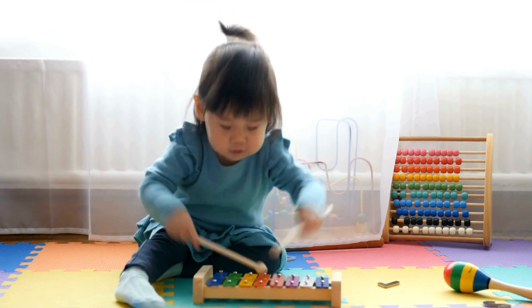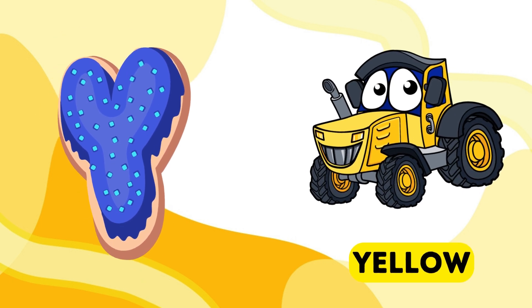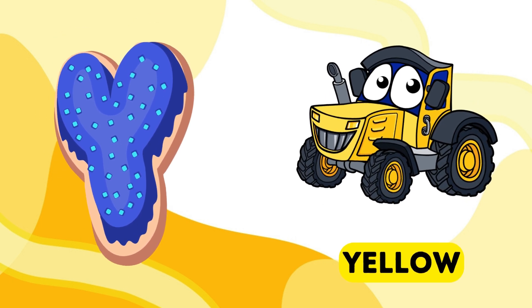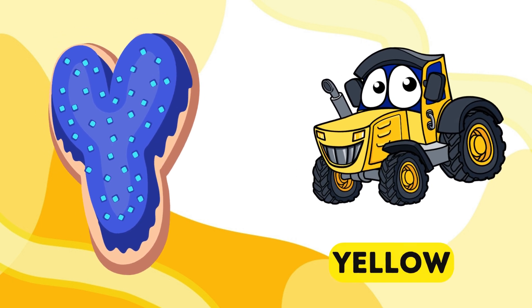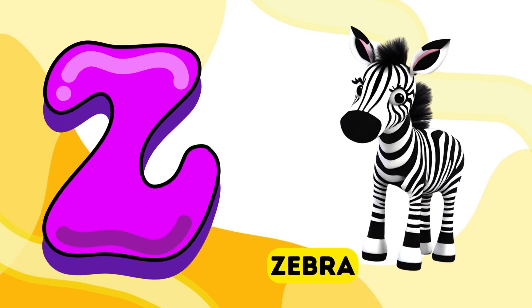Y is for yellow, y-y-yellow. Z is for zebra, z-z-z.